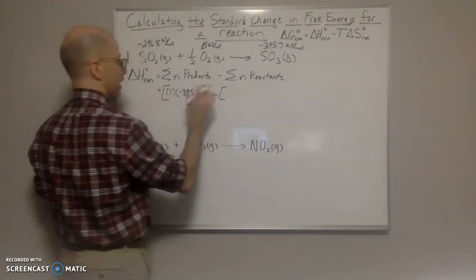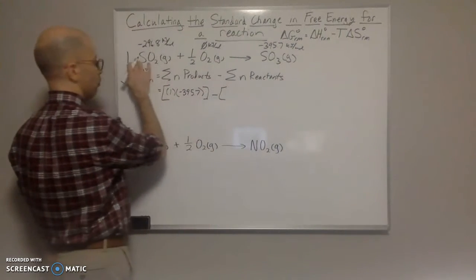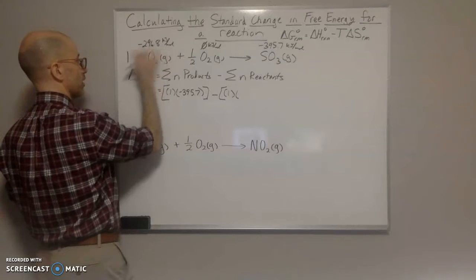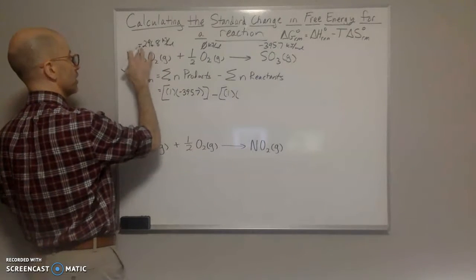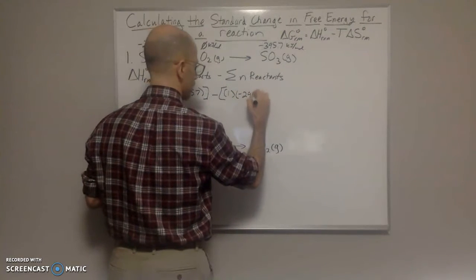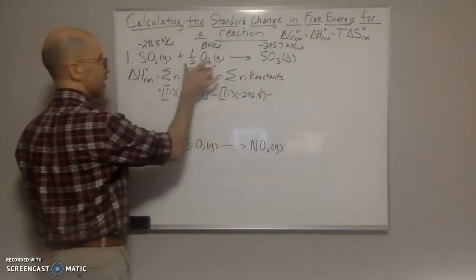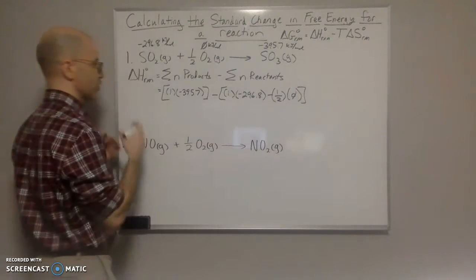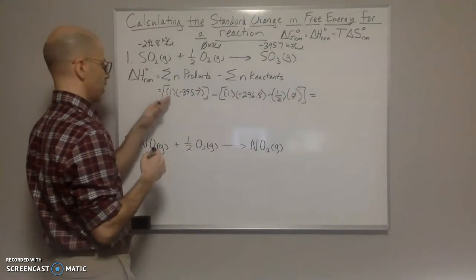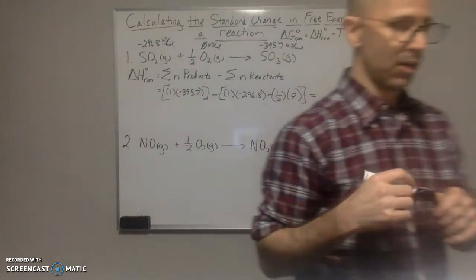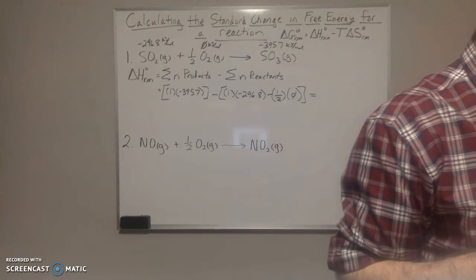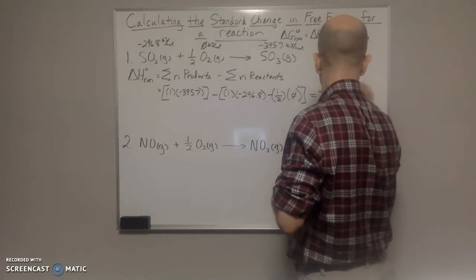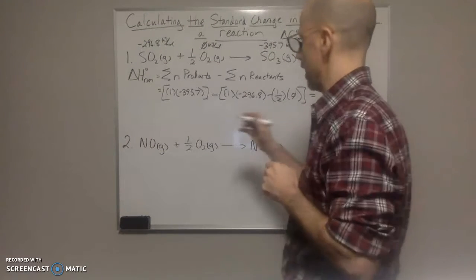Then minus the reactants. We have SO₂ — we have one SO₂ — so 1 times the standard heat of formation, which is negative 296.8. And then oxygen is zero, so it would be one half times zero, which is zero. This comes out to negative 98.6 kilojoules per mole. So that's the delta H of the reaction.